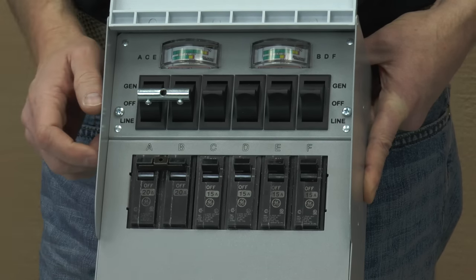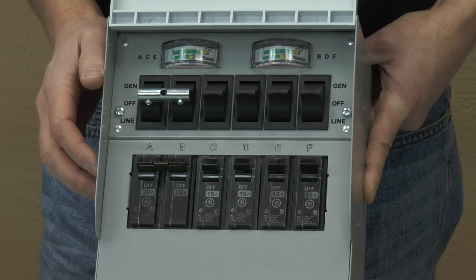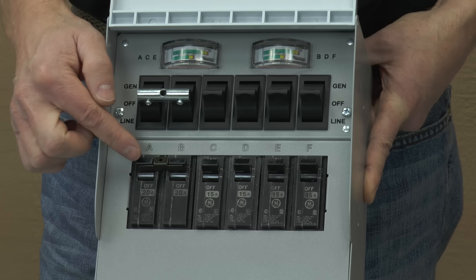If you have a double pole or 240 volt circuit that you would like to operate, like a well pump, it must be on the double pole circuit breaker.